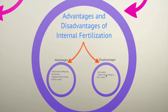Let's talk about the advantages and disadvantages of internal fertilization. The advantages include a high chance of offspring survival. The disadvantages are that it requires more energy to find a mate. These organisms — like human beings — produce very few zygotes. So requiring more energy to find a mate and producing few offspring are notable disadvantages of internal fertilization.